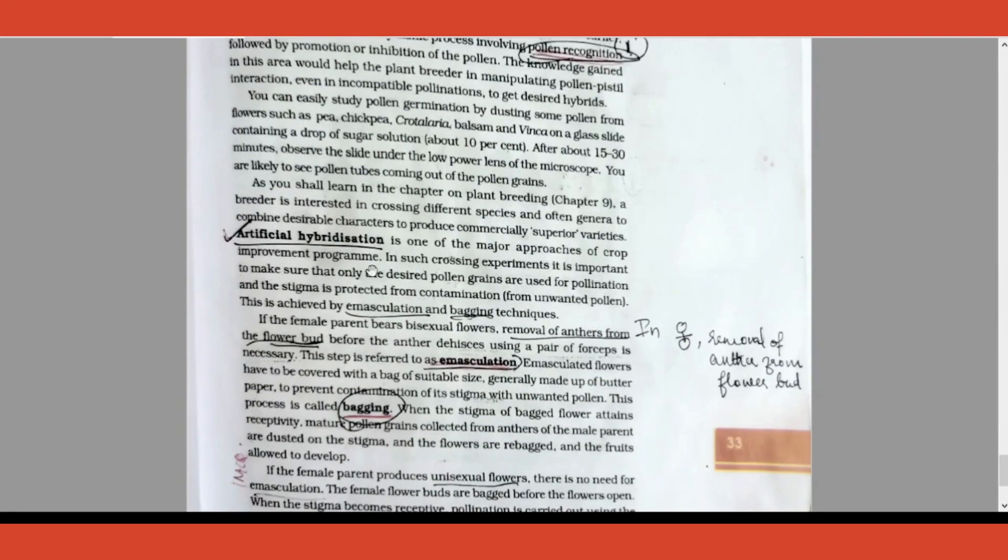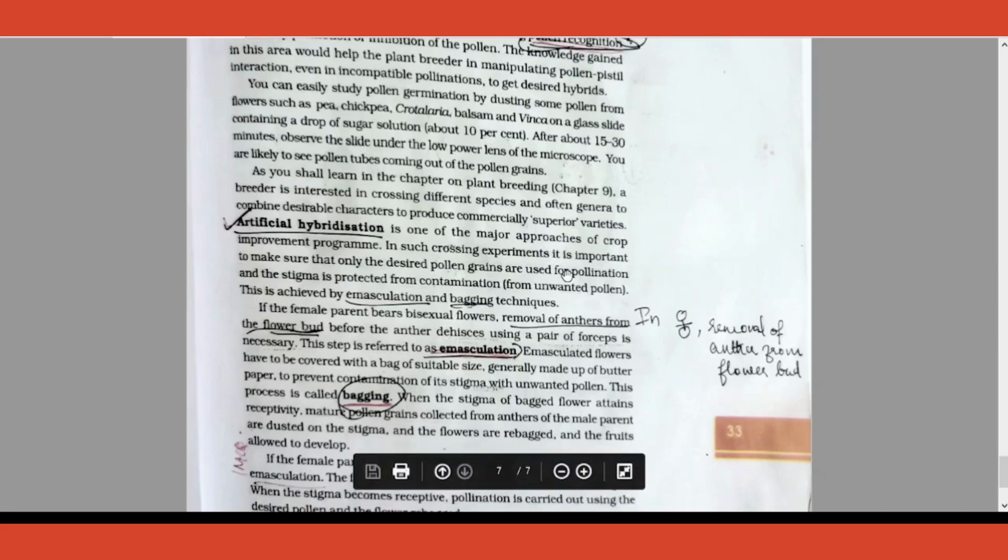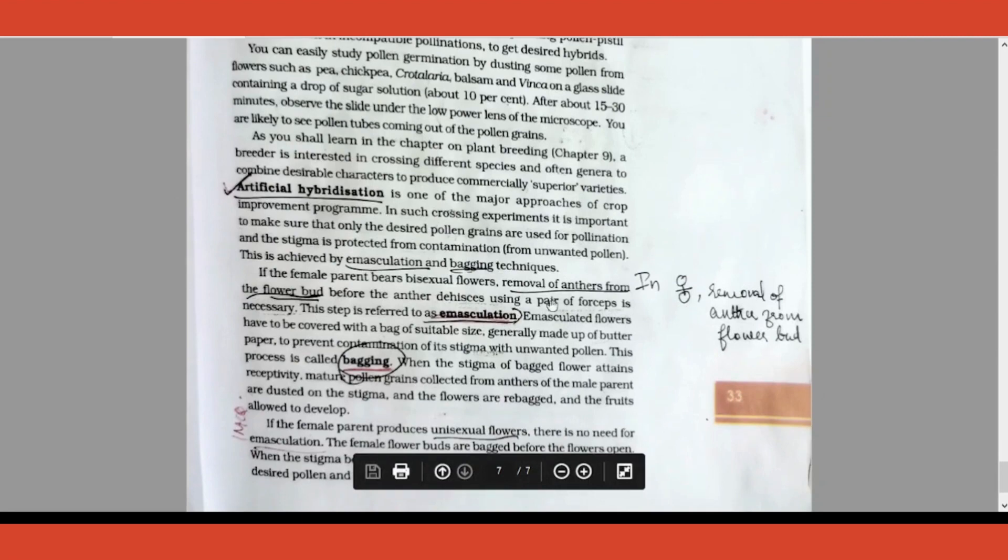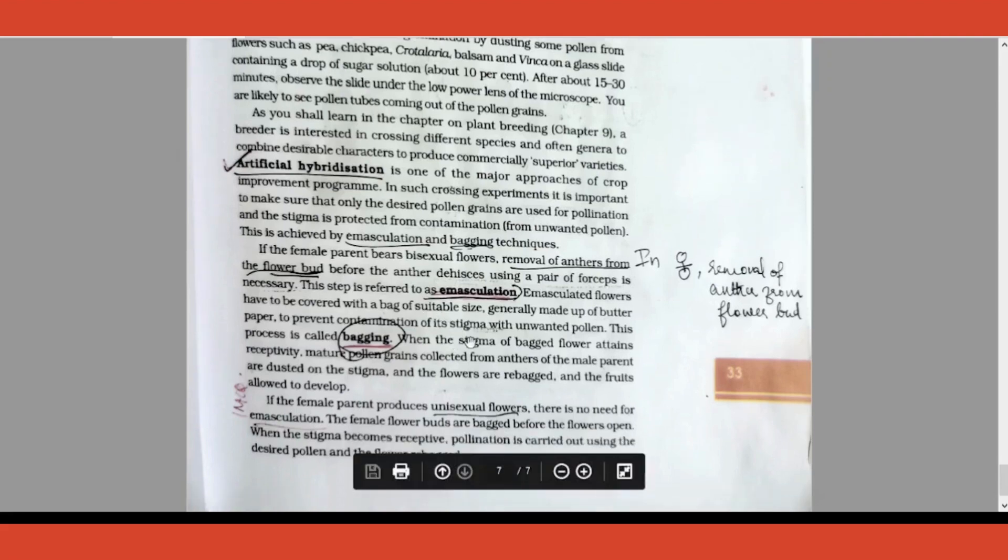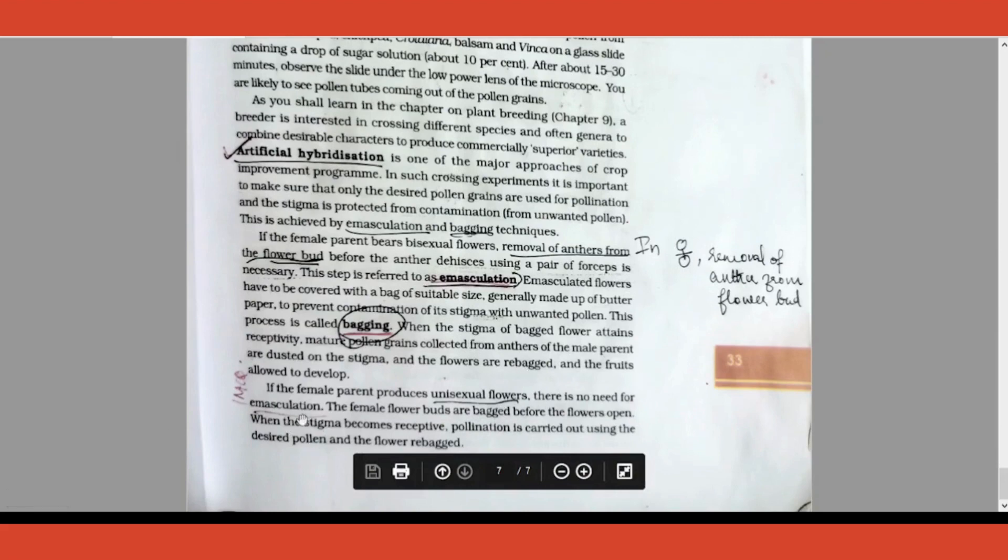What if the pollinator is a human being? Then you call that as artificial hybridization. Under that, what all comes under artificial hybridization? There are three things that they do, one technique only. What is it? First, removal of anther from the flower bud is called emasculation. Then covering it up using a butter paper called bagging, and there is tagging—giving a tag to it.